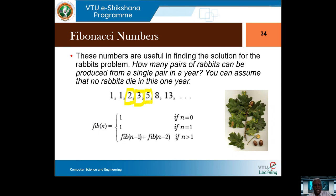Any nth Fibonacci number can be calculated if we know the previous two, which are themselves Fibonacci numbers. Unless we know the Fibonacci values of the previous two, we cannot calculate the current one. Hence it can be put in the form of a recursive function: fib(n) — if n is 0 or 1, return 1 as the two initial values. Otherwise, for n greater than 1, calculate fib(n-1) and fib(n-2).